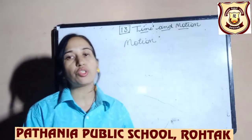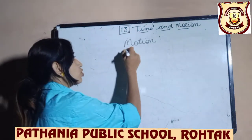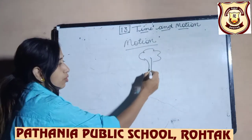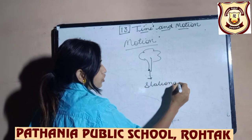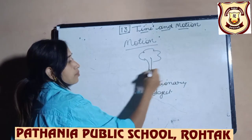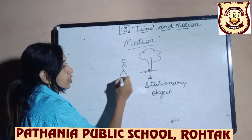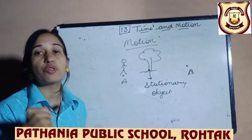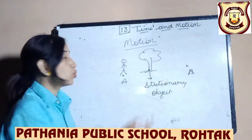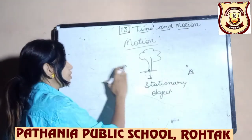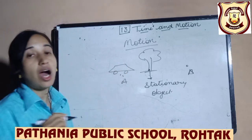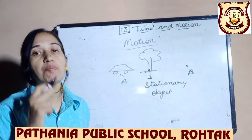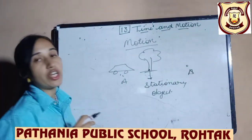After time, we are going to start motion. What is motion? Consider a tree — that is a stationary object. A person moving from point A to point B is in motion. We consider that person is moving with respect to the stationary object. Similarly, to know the speed of a car and how much it has moved, we always measure it with respect to a stationary object.